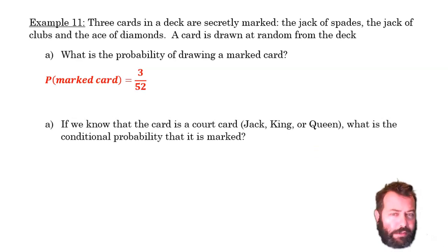Now, let's mix it up a little bit and say, in fact, I know that this card that's been drawn, I've chosen a card at random, and I know that it happens to be a court card, a Jack or King or Queen. And there are 12 of those cards in a normal deck. So what's the probability, knowing that the card I've drawn is a court card, what's the probability that it's been marked?